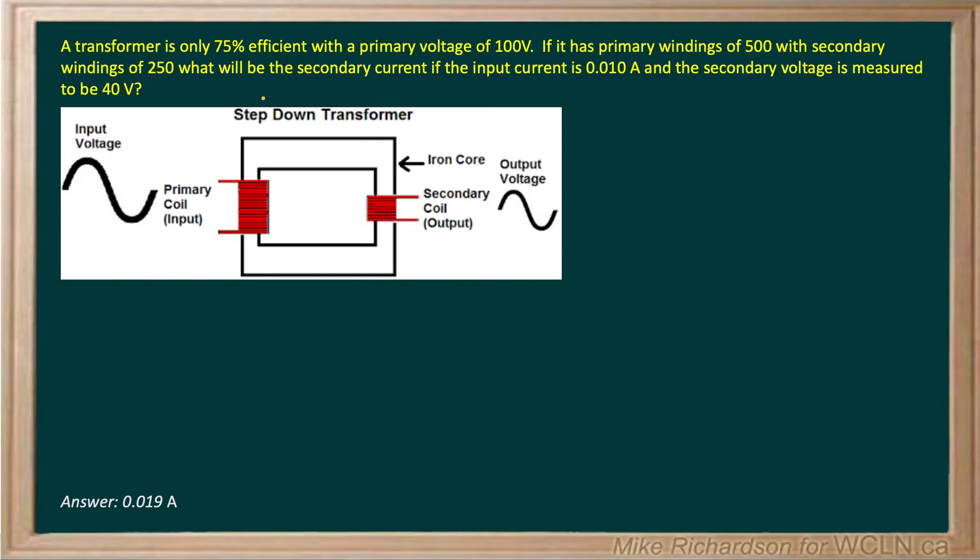So let's assume it's 75% efficient. Well, an ideal transformer means all of the input power goes into all of the output power. But in this case it's not ideal. Only 75% of the input power goes into the output power.